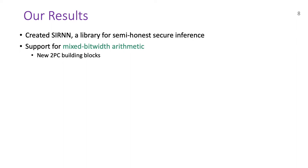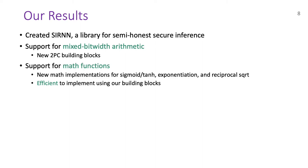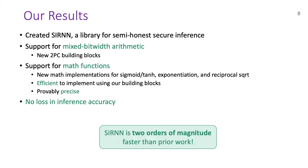SIREN provides support for mixed bit width arithmetic, which is enabled by our new 2PC protocols for the required building blocks. SIREN also supports math functions used in RNNs. In particular, we have developed new math implementations that are efficient to realize securely using our 2PC building blocks. Additionally, our math functionalities are provably precise, which is why SIREN suffers no loss in inference accuracy. Thanks to our math implementations and efficient building blocks, SIREN achieves 2 orders of magnitude improvement over prior works. Finally, with SIREN, we are the first ones to securely evaluate an RNN on speech data, and perform head detection on images.